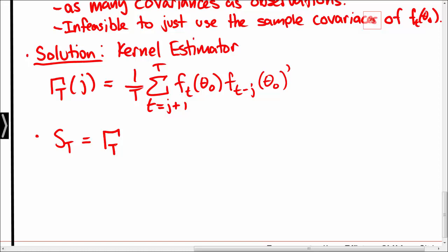The estimator that we propose is St equals γt, which corresponds to the sample variance of Ft, plus the sum from j equals 1 to t minus 1 of ωj times γt of j plus γt of j prime.